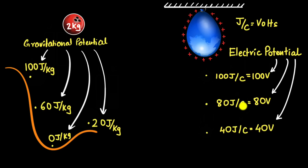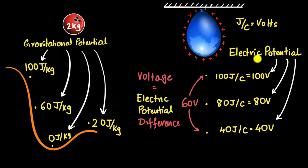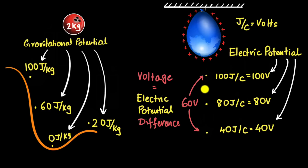So finally — is this what voltage is? Voltage is basically the difference between electric potentials, or electric potential difference. Why do we care about the difference? Because when a charge moves from one point to another, all I care about is what the difference is — that's what we call voltage. For example, the voltage between two points at 100 volts and 40 volts is 60 volts. It means a coulomb going from here to there loses 60 joules of potential energy.